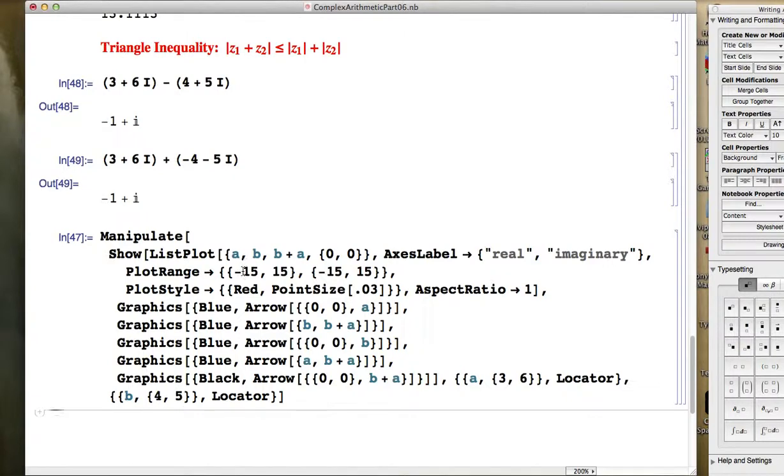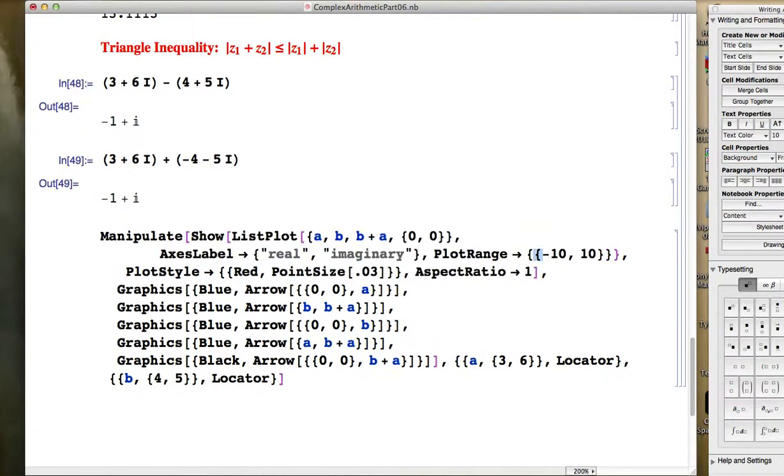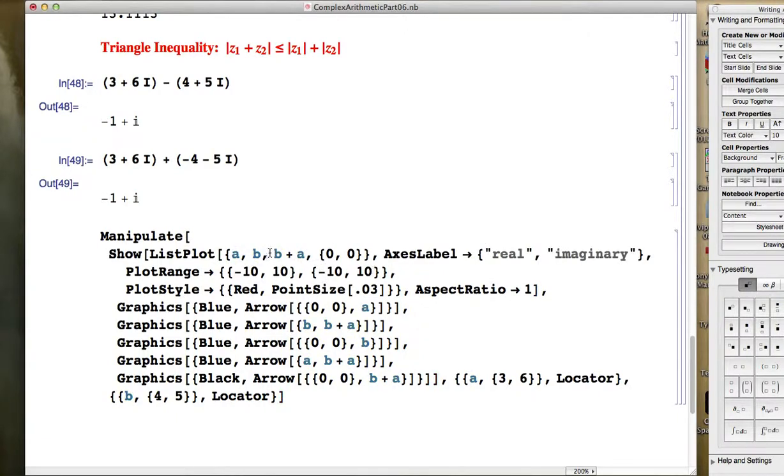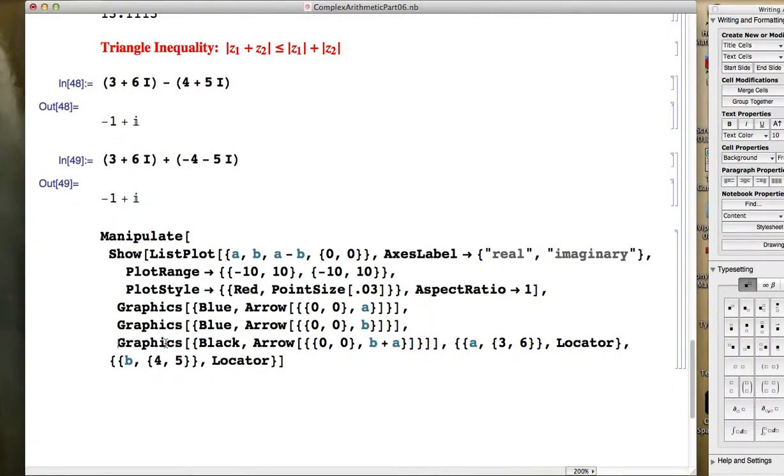I'm going to go back to my original code and modify it to make it a little bit closer in. Let's go negative 10 to 10 in both directions. I'm going to get rid of the dot at a plus b and instead make a dot at a minus b.